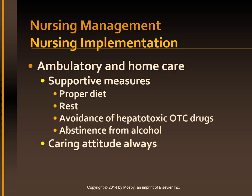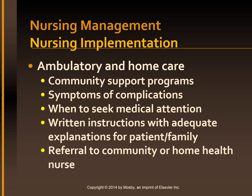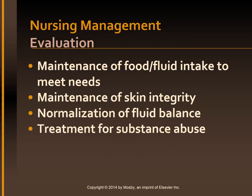Ambulatory and home care: supportive measures with proper diet, rest, and avoiding hepatotoxic drugs, as well as abstinence from alcohol, are most important. Community support programs are available; referral to a community or home health nurse is given along with written instructions regarding when to seek medical attention and symptoms of complications. Evaluation is based on whether the patient is able to maintain food and fluid intake to meet needs, maintenance of skin integrity, fluid balance, and treatment for substance abuse.